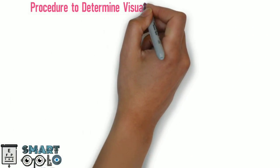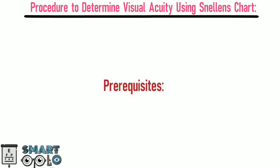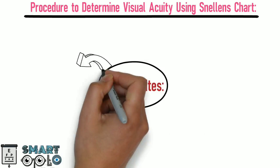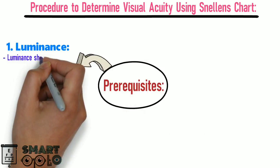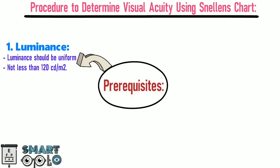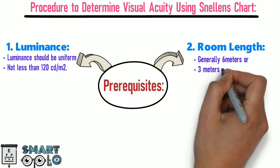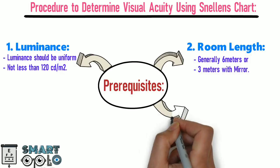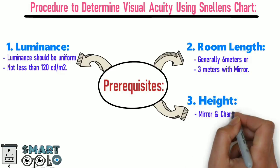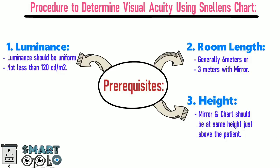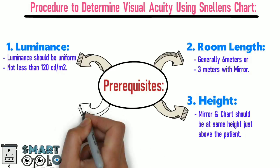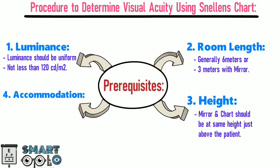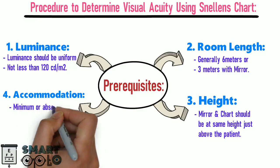Now let's look at the procedure to determine visual acuity using Snellen's chart. Prerequisites: First, luminance — should be uniform, not less than 120 candela per meter square. Second, room length — generally six meters, or three meters with a mirror. Third, height — mirror and chart should be at the same height, just above the patient. Fourth, accommodation — accommodation should be minimum or absent.